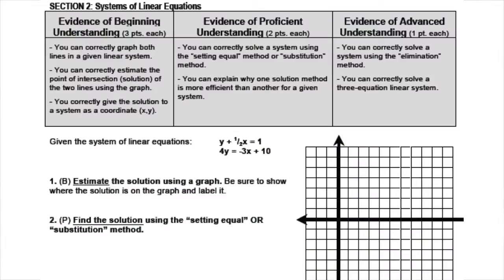But what if you took that range I showed you before, from beginning understandings all the way up to advanced, and put that on the test? When you give feedback, you highlight the things students show. So if a student graphically draws the lines correctly but does the algebra wrong, you highlight that they can correctly graph both lines in a given linear system. That's powerful feedback for the student and for you. When you flip through the top of your tests, it's better feedback.